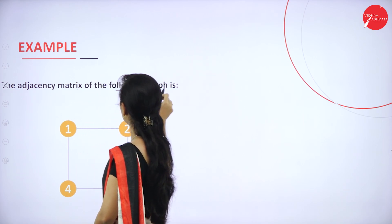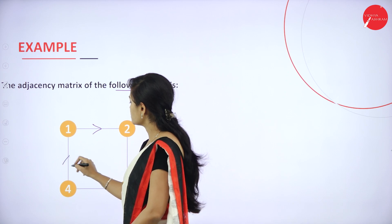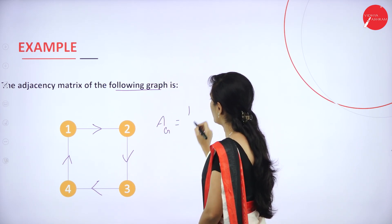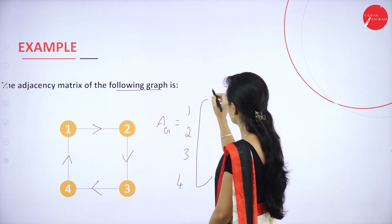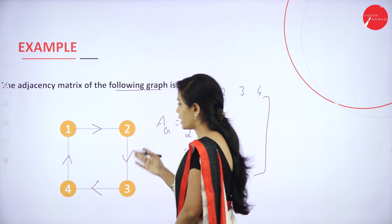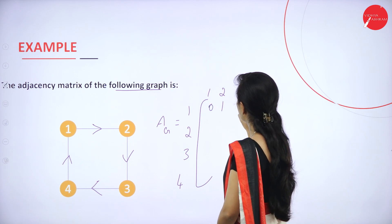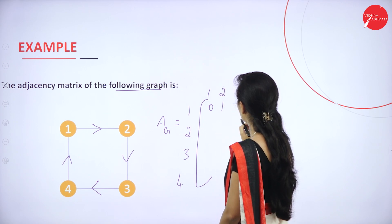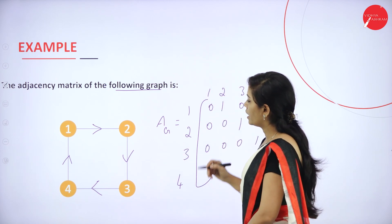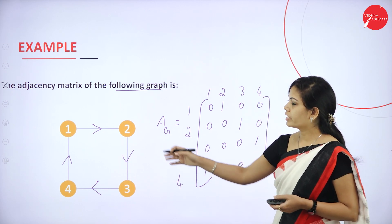The adjacency matrix of the following graph (vertices 1, 2, 3, 4) is constructed as follows. We have 4 vertices. The adjacency matrix rows and columns are 1, 2, 3, 4. Sometimes they will not give directions — if direction is given, you can easily construct it. For vertex 1: (1,2) is 1, others are 0. For vertex 2: (2,3) is 1, others are 0. For vertex 3: (3,4) is 1 and (3,1) is 0. For vertex 4: (4,1) is 1, others are 0. This is your adjacency matrix for a given graph.